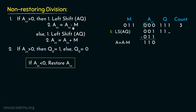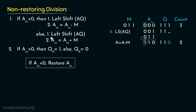Once we are done with the subtraction, we check: if ACC is greater than 0, we set Q0 to 1; otherwise we set Q0 to 0. Since the accumulator has a 1 in the MSB, it is negative, so we set Q0 to 0. With this, the count becomes 2. Moving to the second iteration — the content of the accumulator register is negative. When it is negative, we perform the left shift and thereafter perform the addition.